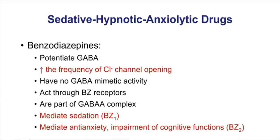Benzos are going to act through BZ receptors. These are subdivided into BZ1 and BZ2. BZ1 can be thought of as the sleep receptor — it mediates the sedative effects of benzodiazepines. Whereas BZ2 mediates all of the other actions of a benzodiazepine, including anti-anxiety effects and impairment of cognitive functions.